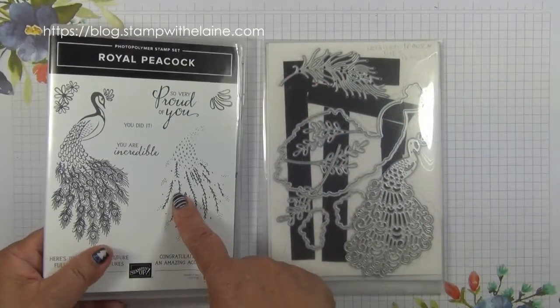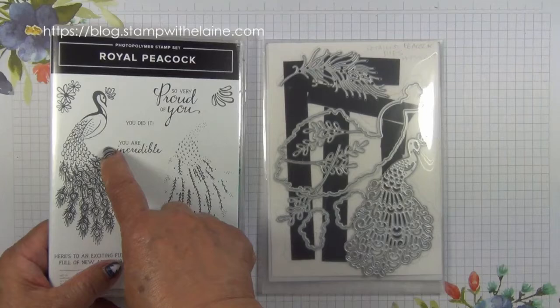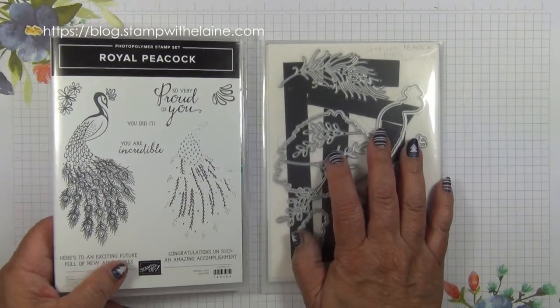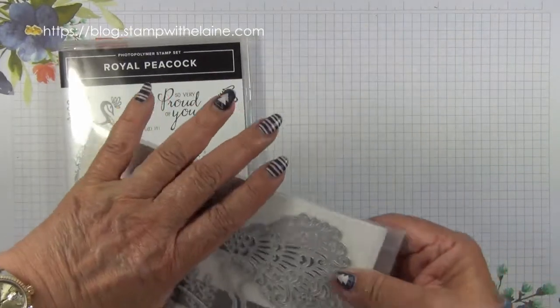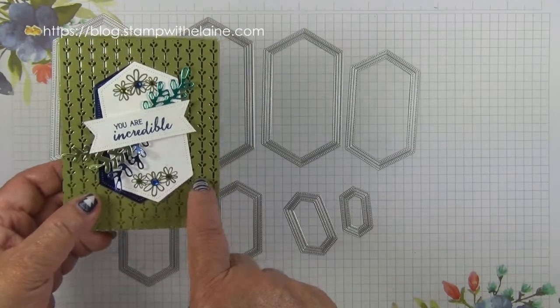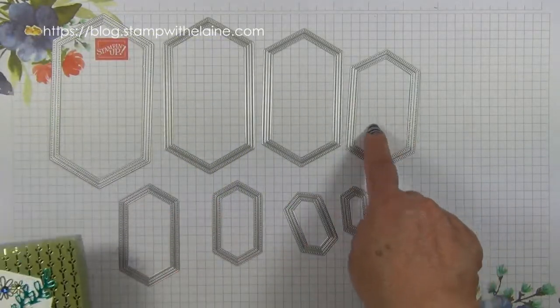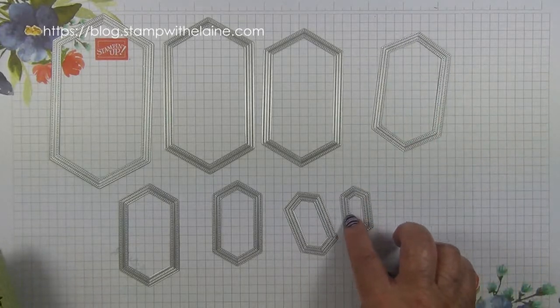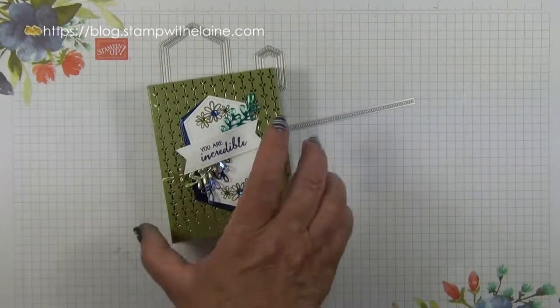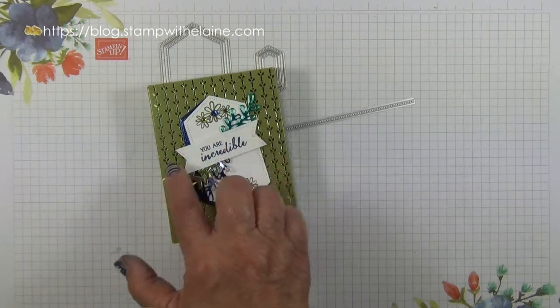I'm using the Royal Peacock Stamp Set for my sentiments, this sentiment in particular, and the detailed peacock dies to die cut the feathers. I'll also be using the stitched nested labels dies and it's the fourth largest one and also the smallest one, the linear one, and that's to create this label here.